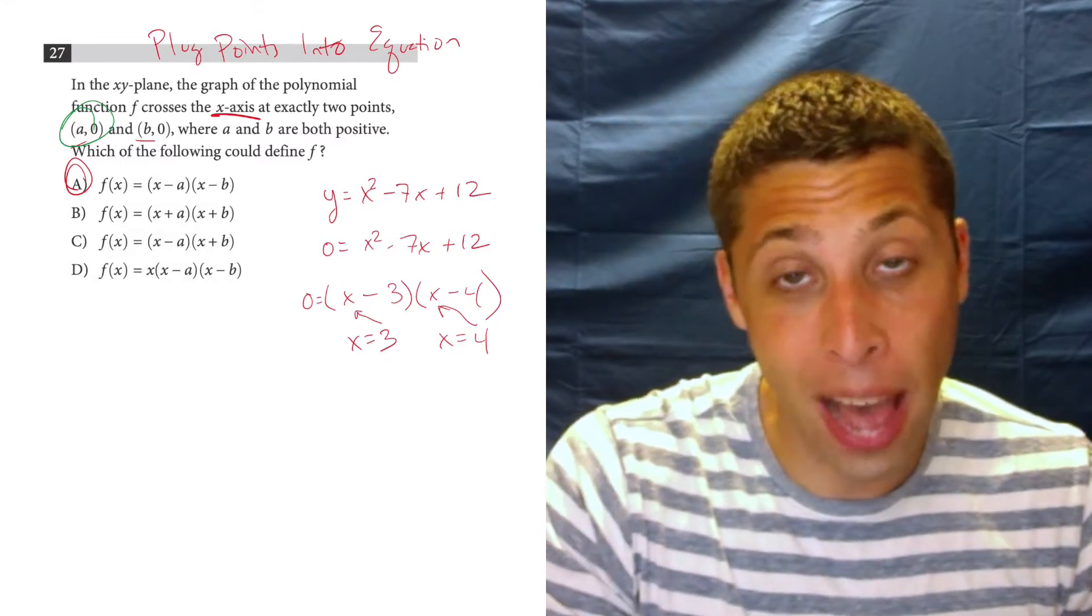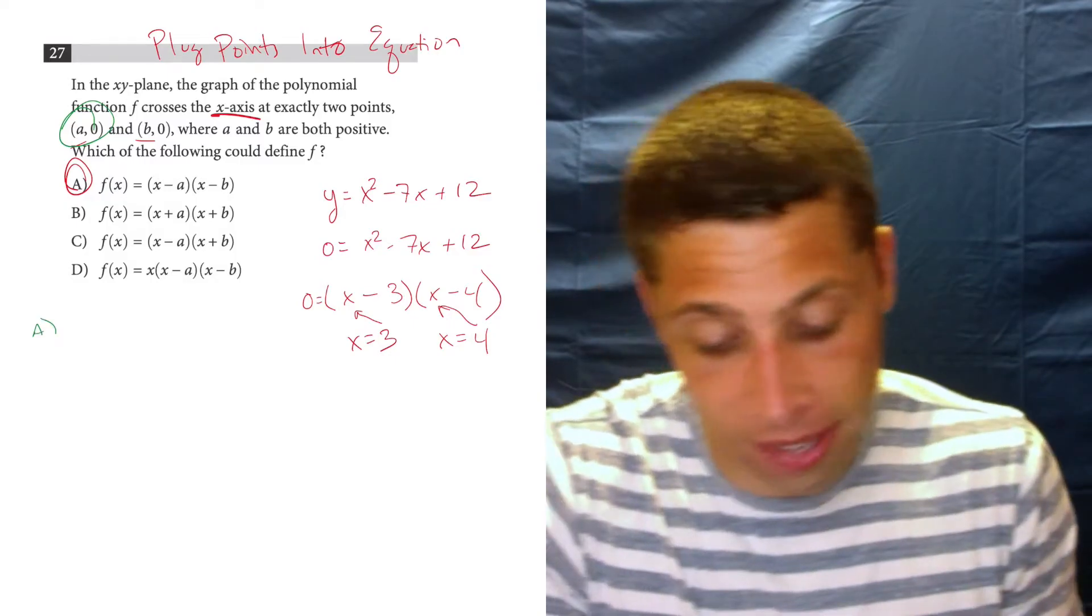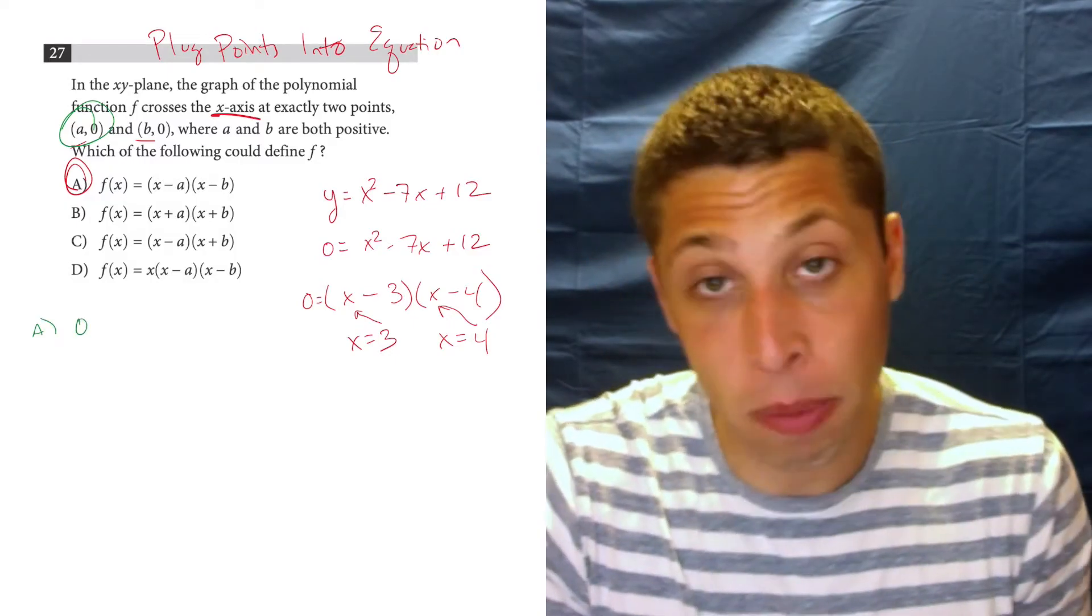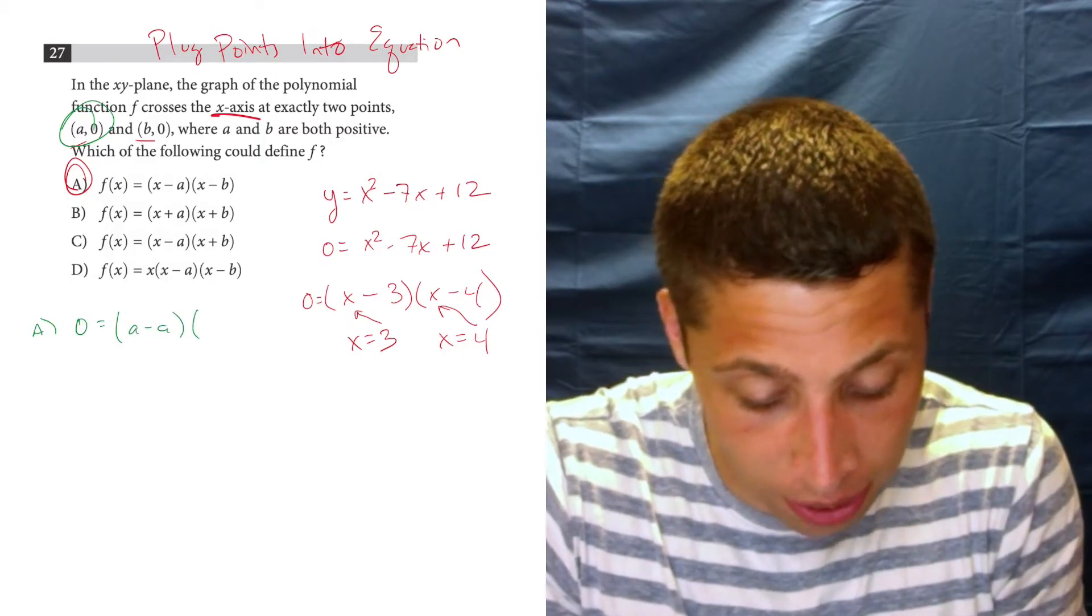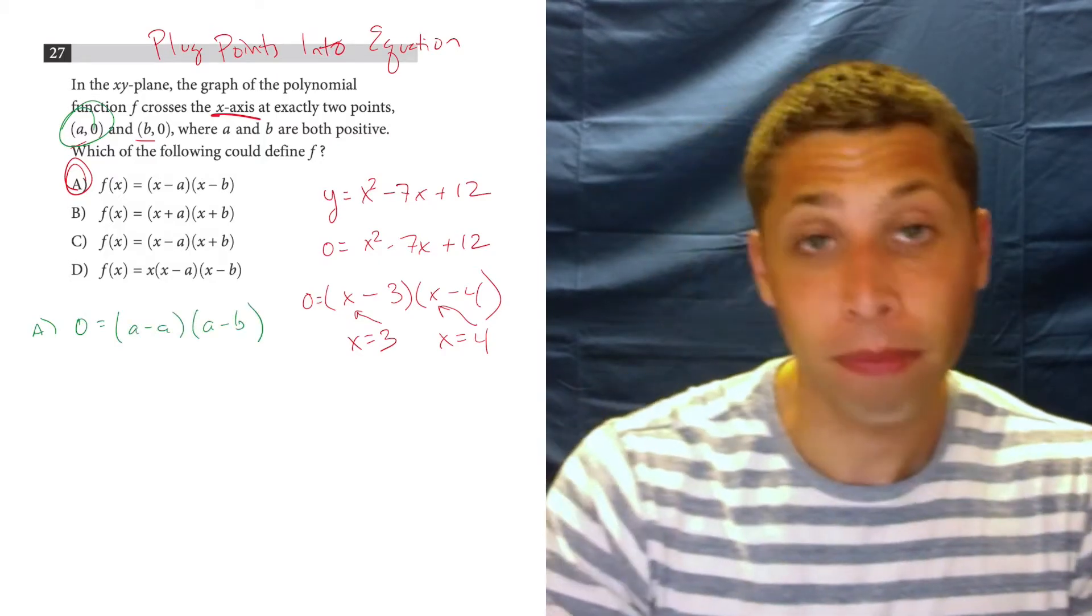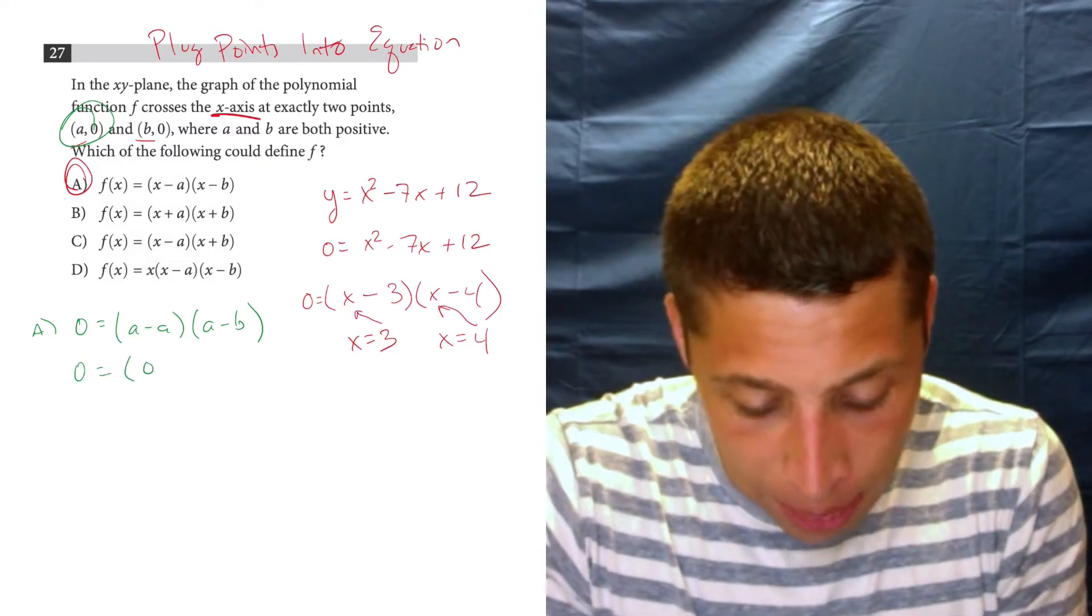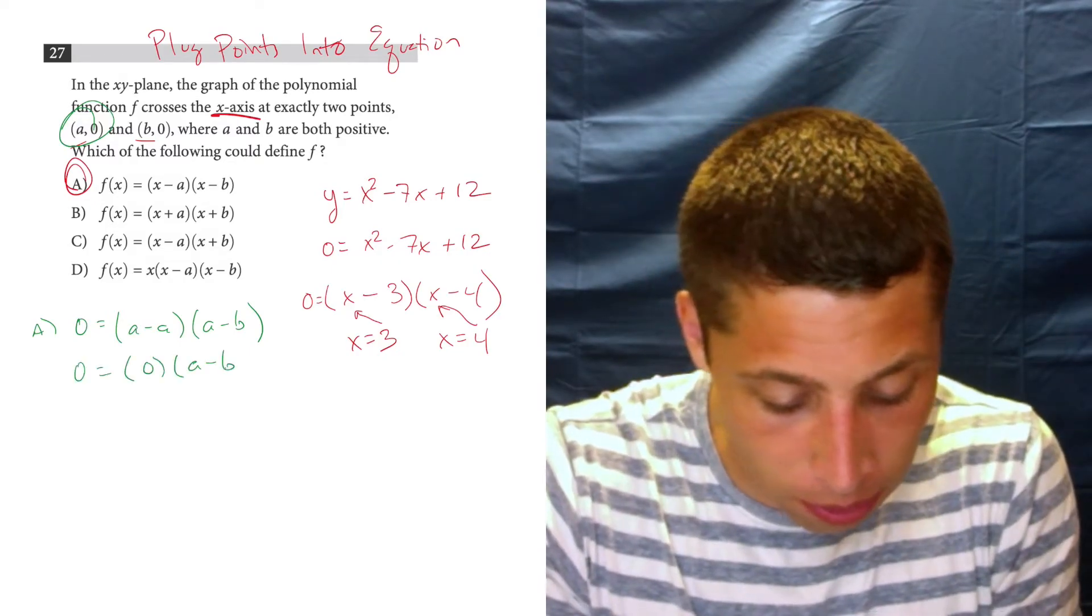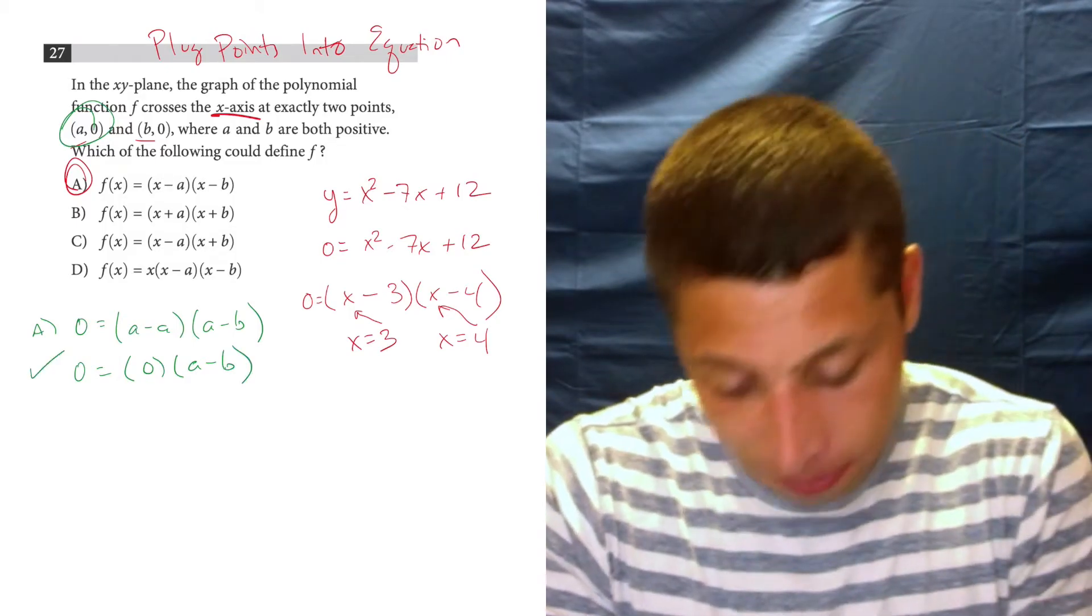If I put that point into each of these choices, it should work. So let's just try a0, so 0 would be my y, so that's my f of x, equals a minus a, a minus b. Well, a minus b is a mess, can't do that, but a minus a I can do, and that's 0. 0 times a minus b is 0, so that checks out.